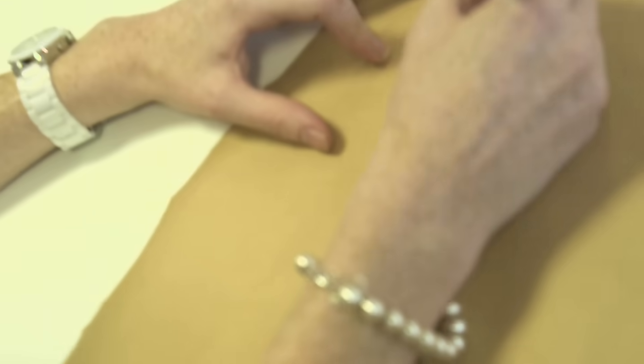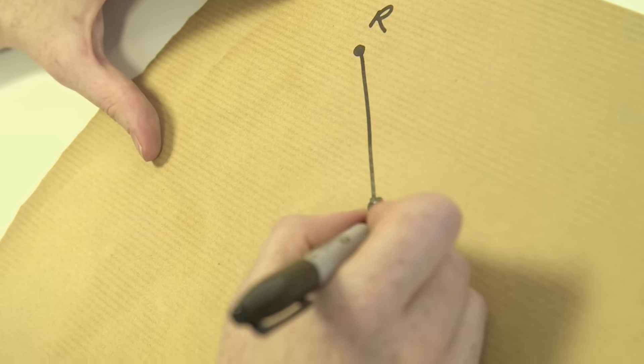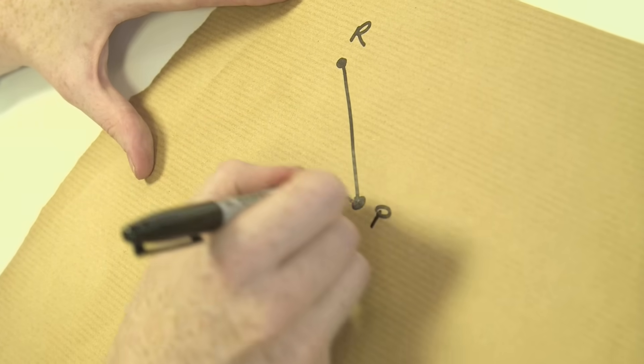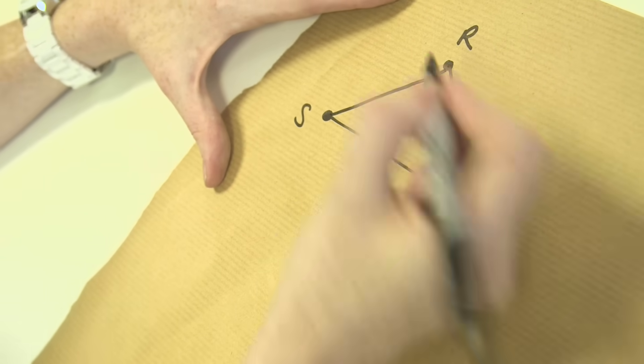OK, so normally if you have rock, paper, scissors, you have rock up there and rock is beaten by paper, which is then beaten by scissors. So none of these strategies dominate the other.